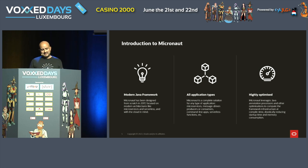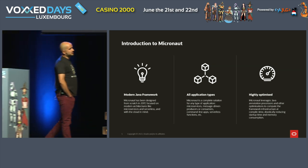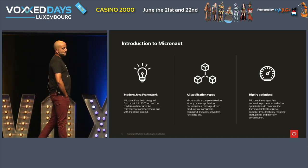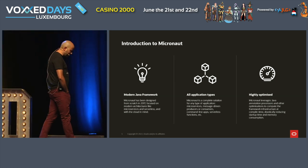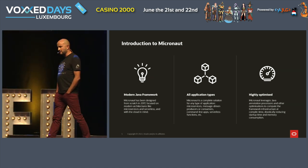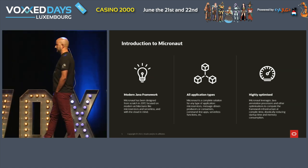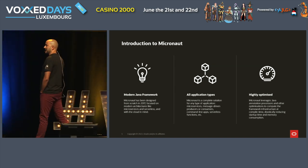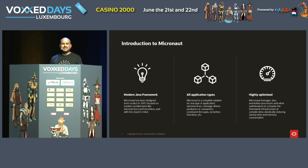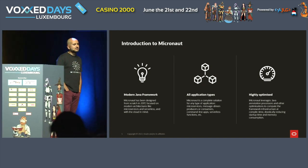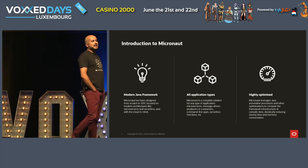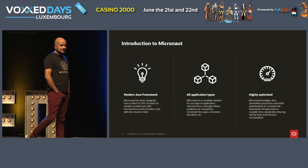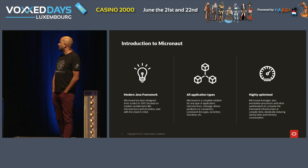The second idea is you can use Micronaut for all kinds of applications. Typically people use it for microservices and server-side applications, but you could also use it for Kafka consumers or producers, CLI applications, or even serverless — and Micronaut is great for serverless, for a reason I'll explain later. The third idea: it is highly optimized. Performance is really important for us. We spend a lot of time saving milliseconds and megabytes from startup time and memory consumption.